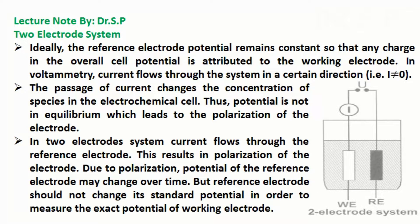Ideally, the reference electrode potential remains constant so that any change in the overall cell potential is attributed to the working electrode. In voltammetry, current flows through the system, that is, current I is not equal to zero.